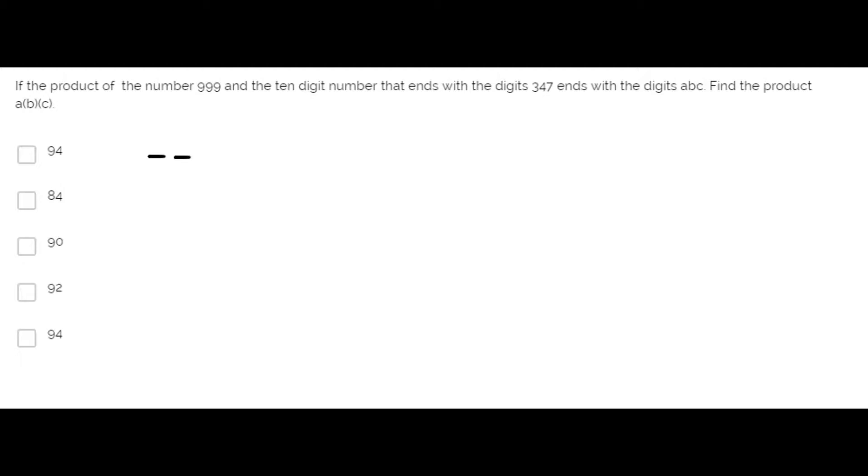We have a 10-digit number that ends with 3, 4 and 7 and we multiply that number by 999 and the product is a number that ends with the digits A, B and C.